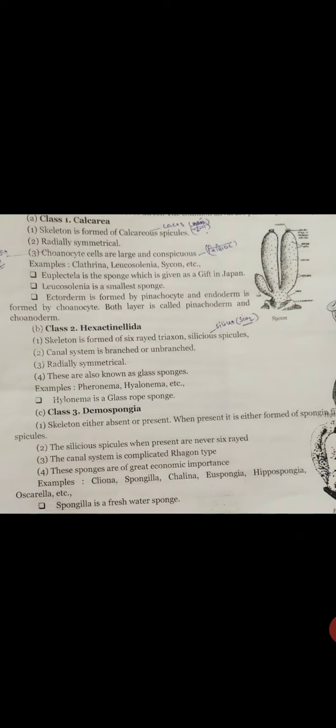Second class: Hexactinellida or Hyalospongiae. Skeleton is formed of six-rayed triaxon siliceous spicules. Three axes, three points. The spicules are siliceous, meaning made of silica (SiO2). The previous class had calcium carbonate, but this one has silica spicules.